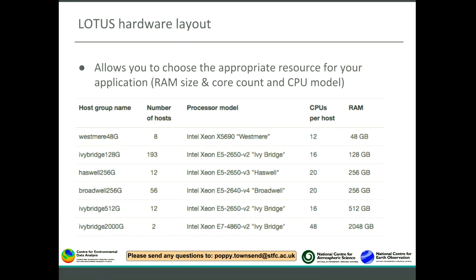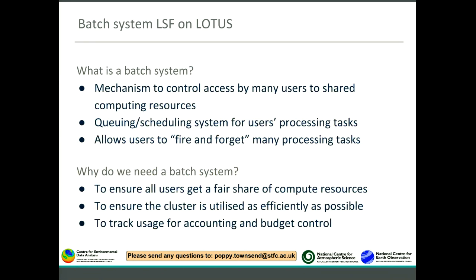Looking at the hardware table, the Ivy Bridge nodes with 128 cores are the most numerous, which is quite useful as the majority of users rely on Ivy Bridge. The batch system is a mechanism to control access for many users; access is controlled through scheduling jobs to a queuing system.